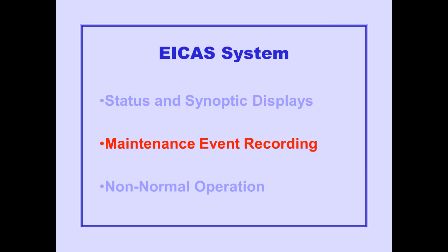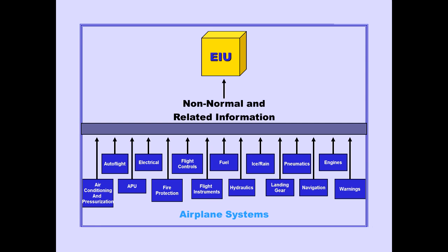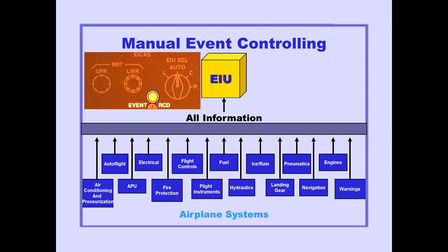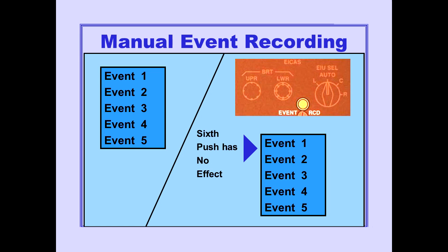Now let's look at the maintenance event recording function of the ICAST. Automatic event recording occurs whenever a non-normal condition is detected by an EIU. Information on the non-normal condition and related information is stored in EIU memory. Manual event recording is also available. Pushing the event record switch on the ICAST control panel records all information available to the EIU. In manual event recording, up to five events may be recorded. Pushing the event record switch a sixth time has no effect.